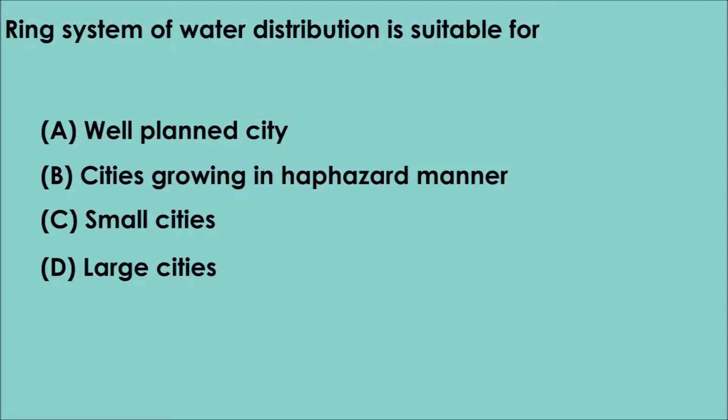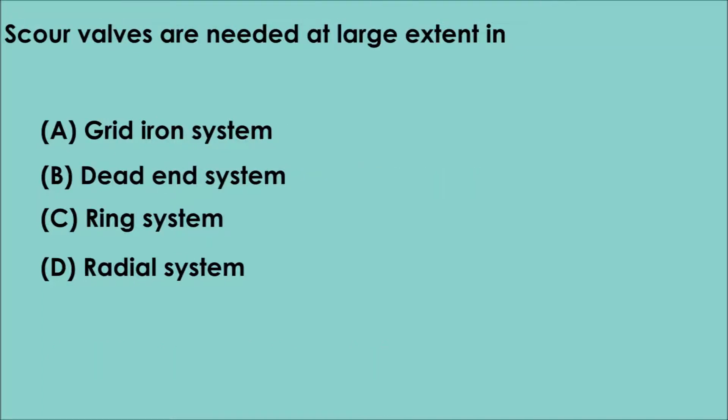Question 3. Ring system of water distribution is suitable for: A. Well-planned city. B. Cities growing in haphazard manner. C. Small cities. D. Large cities. The correct answer is option A. Ring system of water distribution is suitable for a well-planned city.